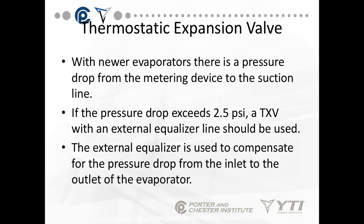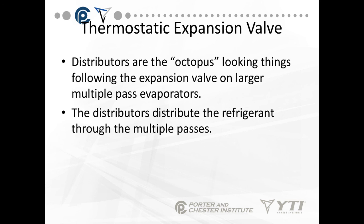With newer evaporators, there's a pressure drop from the metering device to the suction line. If the pressure drop exceeds 2.5 PSI, a TXV with an external equalizer line should be used. The external equalizer is connected to the suction line after the bulb, and it's used to compensate for the pressure drop from the inlet to the outlet of the evaporator. We also have distributors on some newer and heavier coils — octopus-looking things that follow the expansion valve on large multi-pass evaporators, more often seen in air conditioning. Distributors distribute the refrigerant through the multiple passes of the evaporator.